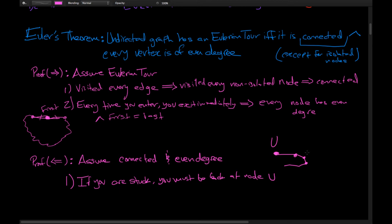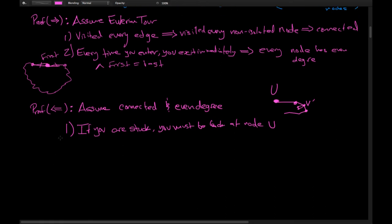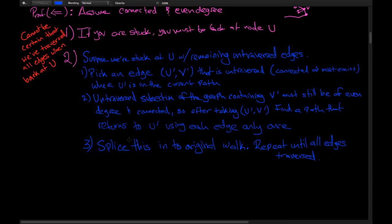Suppose you arrived at some node V'. In order to arrive there, you must have traversed an odd number of the edges connected to V', because your arrival is not yet paired with a departure. We're not done yet because we cannot be certain we've traversed all edges when we arrive back at U. We know we're stuck at U, but we're not sure if we've traversed every single edge in the graph.